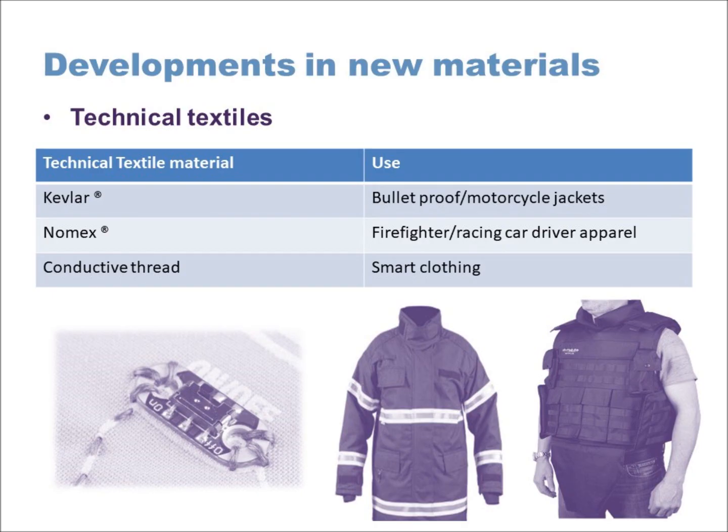The last topic is technical textiles. Kevlar was developed as a very strong, resistant material used for things like bulletproof jackets and motorcycle gear, because it offers great durability and toughness against force. Nomex is a heat-retardant material, protective against heat, used in firefighters' clothing and racing driver suits. Both Kevlar and Nomex are registered trademarks — brand names of the companies that produce them, not the technical names of the materials.